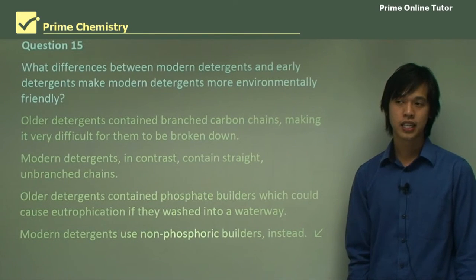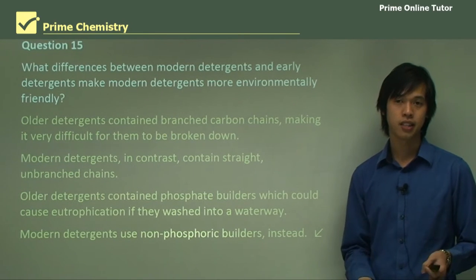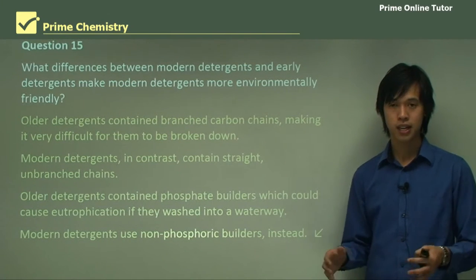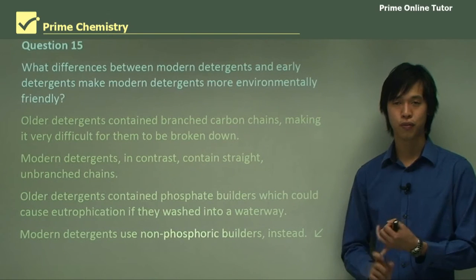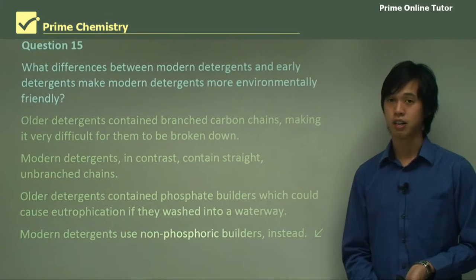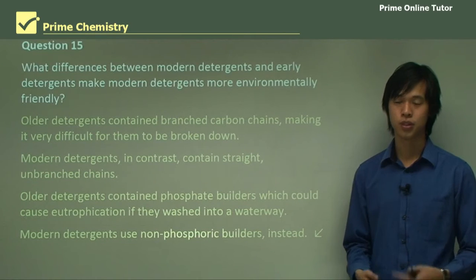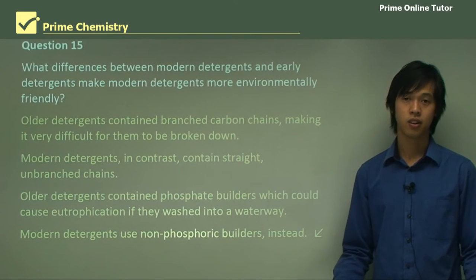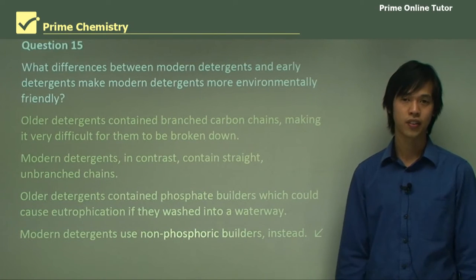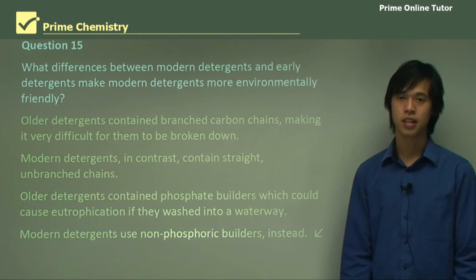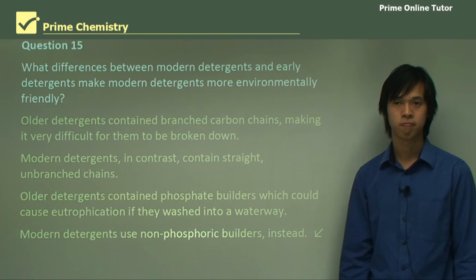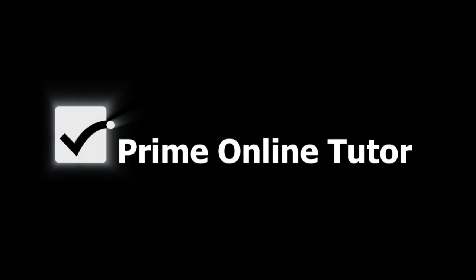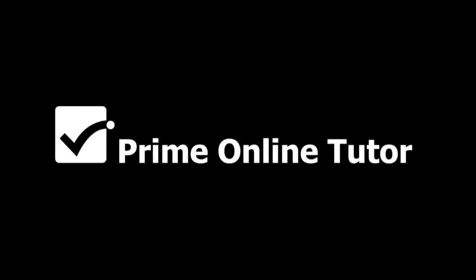That concludes today's lesson on the environmental impacts of soap. We've looked at the two major environmental impacts: eutrophication from the phosphate builders, and biodegradability — and how we can mitigate them using modern technology. This concludes our series on surfactants and synthetic detergents. I look forward to seeing you at our next lesson. Thank you guys for watching — bye bye!